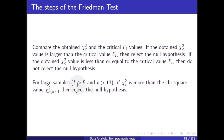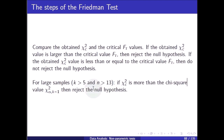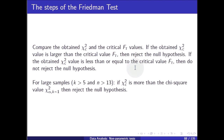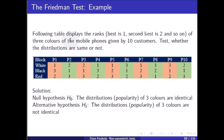So if k is greater than 5 and n is greater than 13, we use the chi-square table. But if these conditions are not true, then we have to use the Friedman test table. The following example displays the ranks — best is one, second best is two, and so on — of three colors of a mobile phone given by 10 customers.